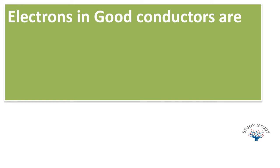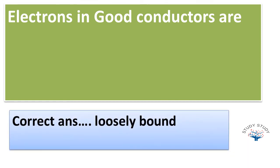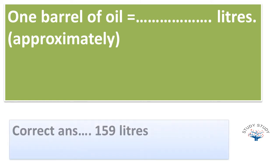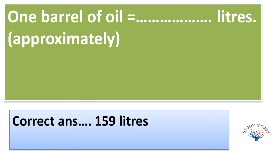Electrons in good conductors are - the correct answer is loosely bound. Next, one barrel of oil is equal to - the correct answer is 159 liters.